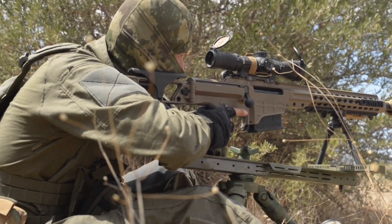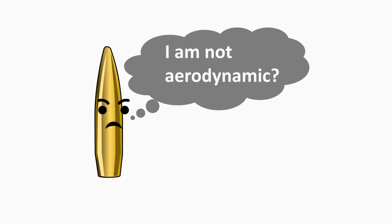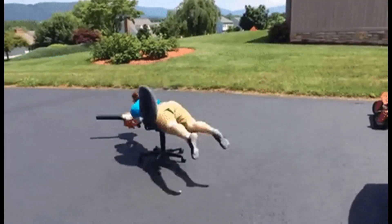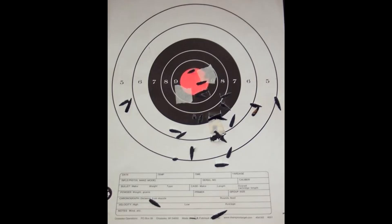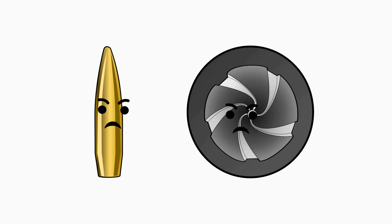It's important to understand that the bullet itself is not aerodynamic until it gets spin. If you throw it with your hand it will tumble and hit the target with the side. That's exactly what happens when the twist rate does not match the bullet's length, diameter, and weight.